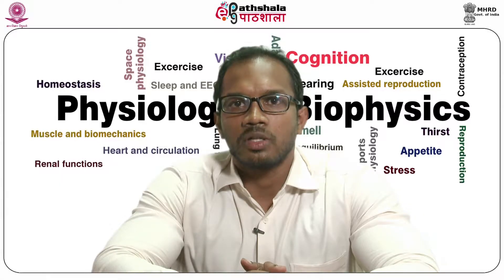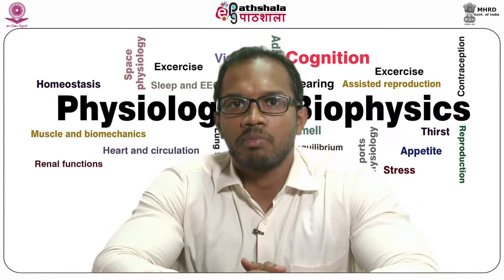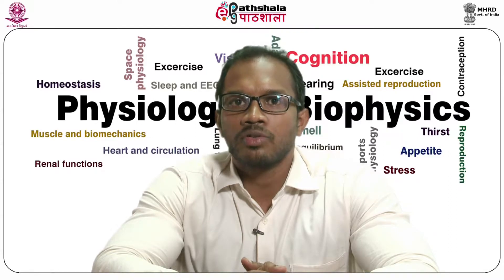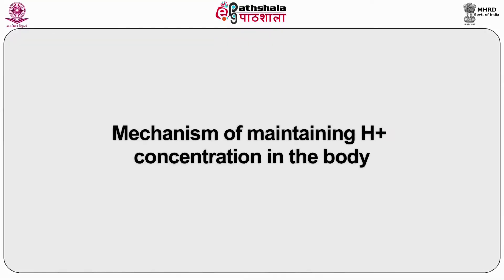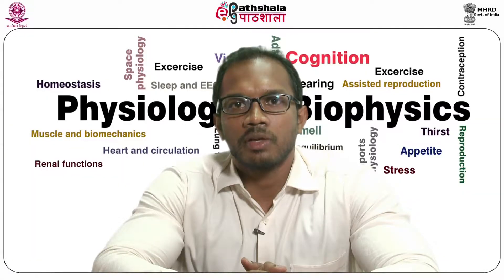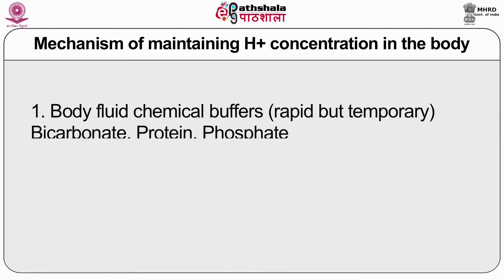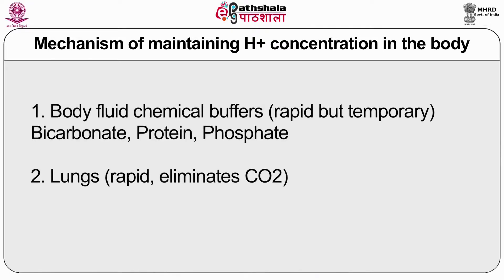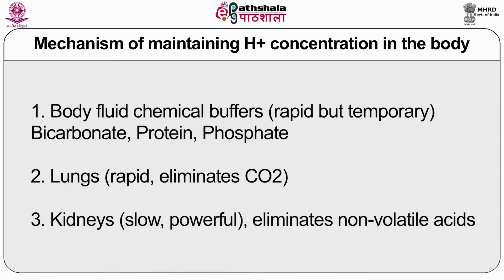Different body fluids have different pH values. There are three mechanisms to maintain H+ ion concentration in our body. First is the body fluid chemical buffers that act rapidly but temporarily — bicarbonate, protein, and phosphates are examples. Second is the lung, which acts very rapidly. Third is the kidney, which acts slowly and eliminates non-volatile acids.